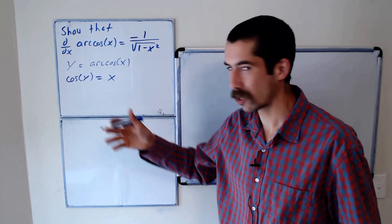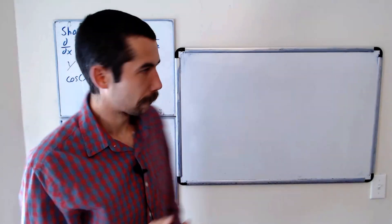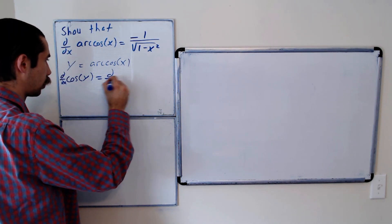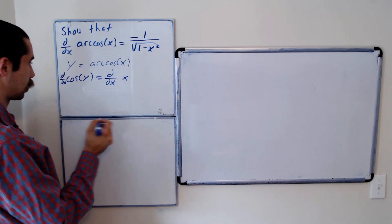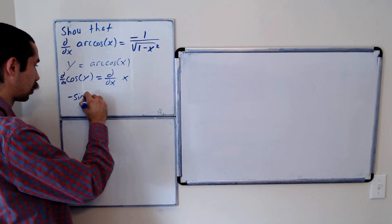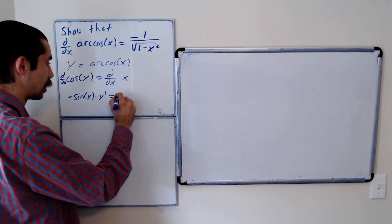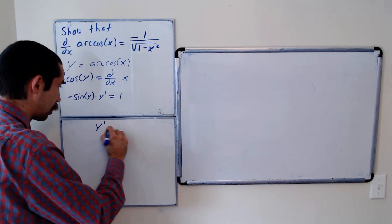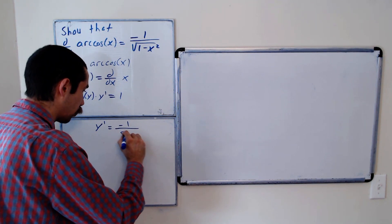And now we'll hit both sides with the derivative. So the derivative of cosine of y is equal to the derivative of x. Another way to say that is negative sine of y times y prime is equal to 1. Or y prime is equal to negative 1 over sine of y.